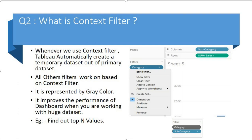It improves the performance of the dashboard when we are working with huge data sets. Let's take an example of the context filter. Suppose we are working with category and subcategory sales data and we want to find out the top five subcategory from each category. For this purpose we use context filter.